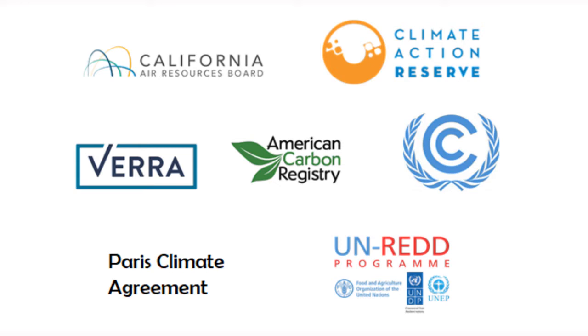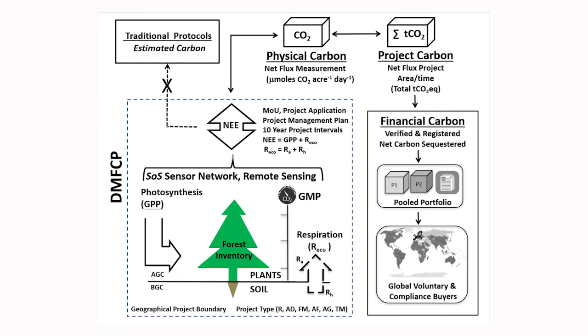The DMFTP improves upon existing protocols based on estimation, including the California Air Resources Board, Climate Action Reserve, the American Carbon Registry, VERRA, and the Clean Development Mechanism, and policy platforms such as the Paris Agreement and the Reducing Emissions from Deforestation and Degradation, or REDD, which is a UN program. These existing protocols have proven to be ineffective in stopping deforestation — they can't be readily verified and are troublesome and expensive for landowners. These existing protocols do not actually measure CO2 at any time or account for soil or ecosystem respiration as CO2 emissions.